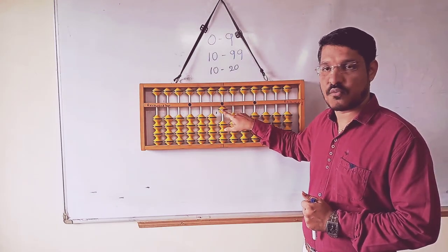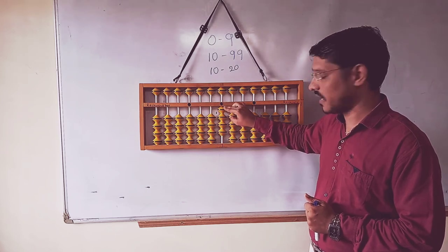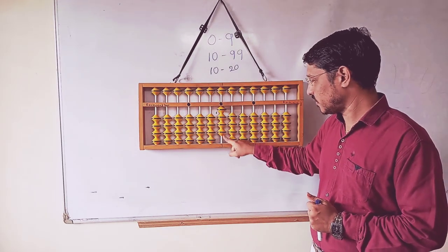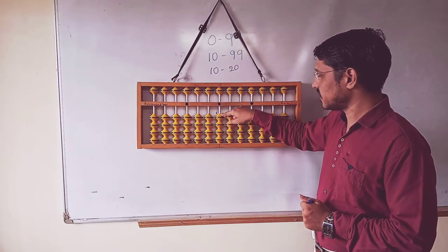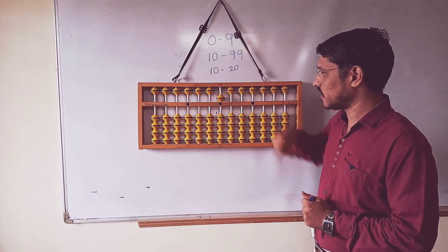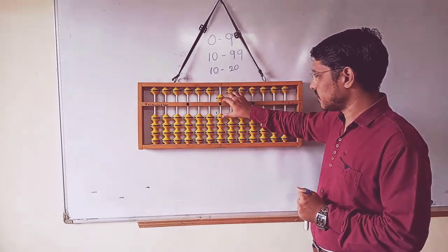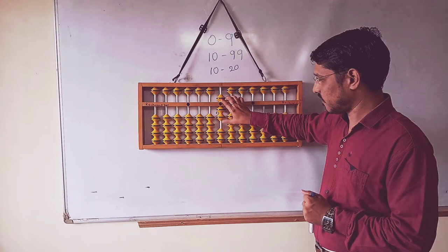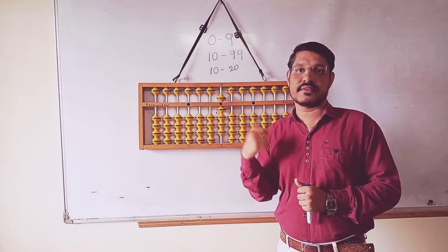1, 2, 3, 4. For 5, we don't have any beads here. Because of that reason, we got upper beads for the value 5. And 6, 7, 8, 9. This much I have studied in my first video.